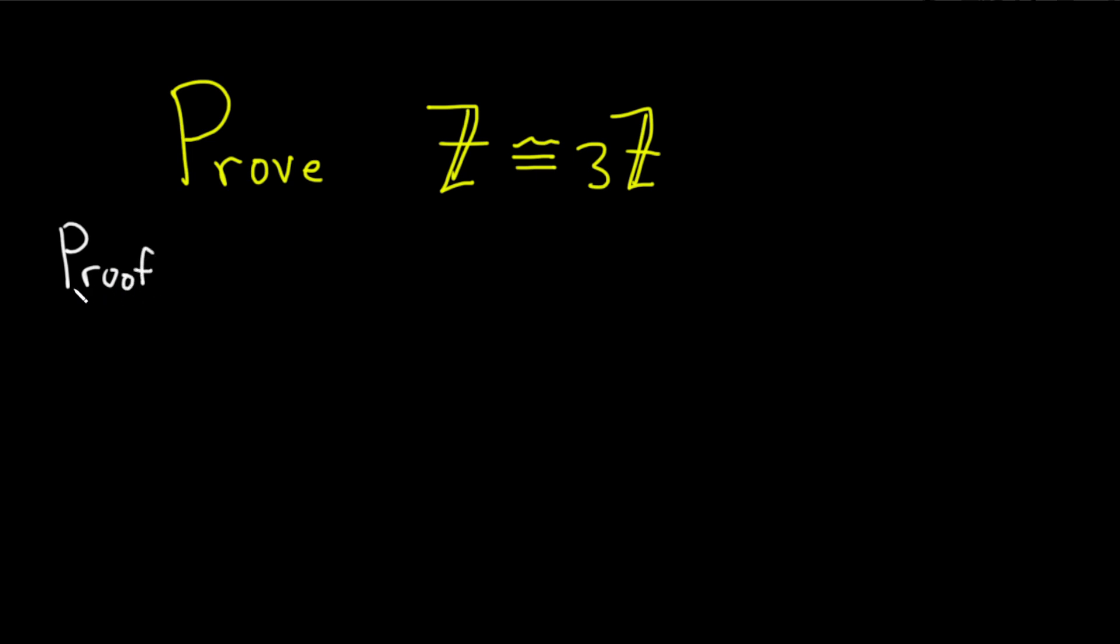To prove that two groups are isomorphic, we have to first come up with a map, and we have to show that it's a homomorphism. We have to show that it is one-to-one, and we have to show that it is onto.